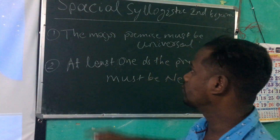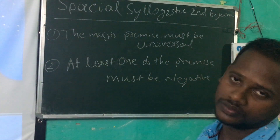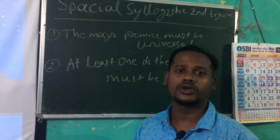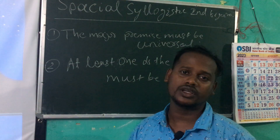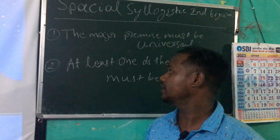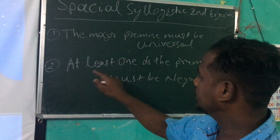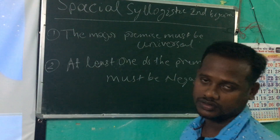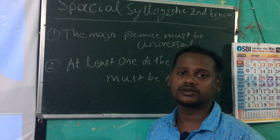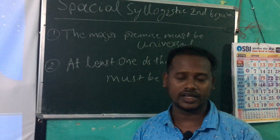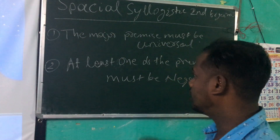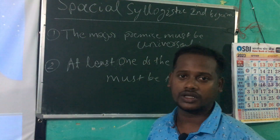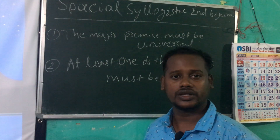There are two special syllogistic rules of the second figure. Rule 1: the major premise must be universal in the second figure. Rule 2: at least one of the premises must be negative in the second figure.